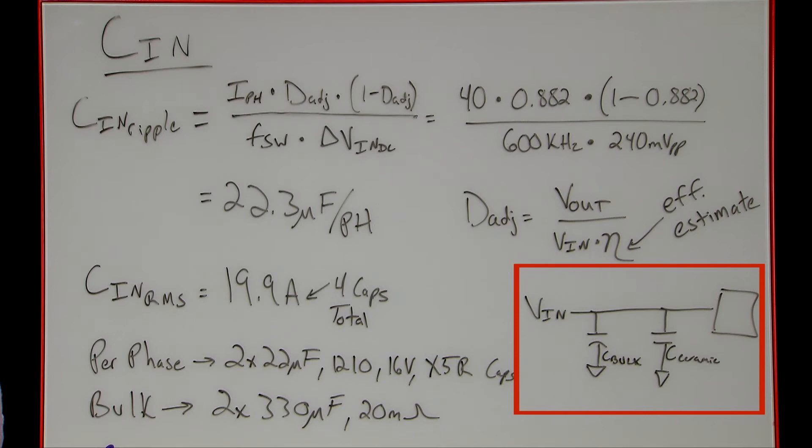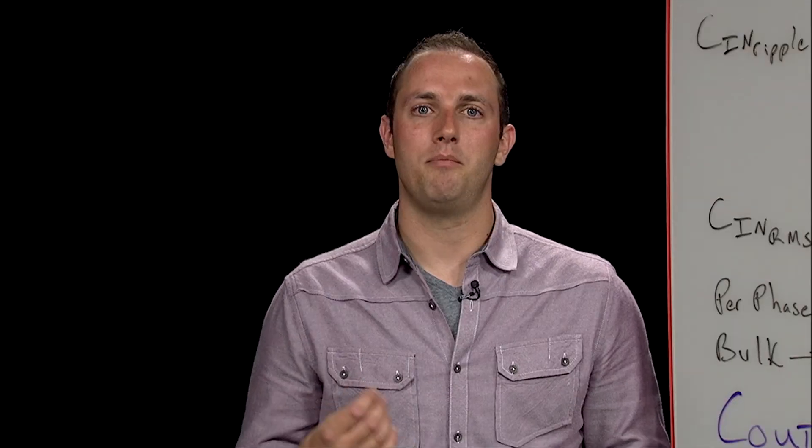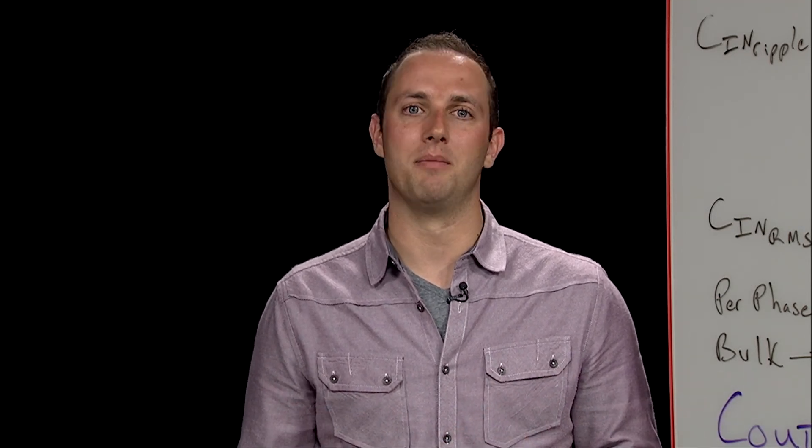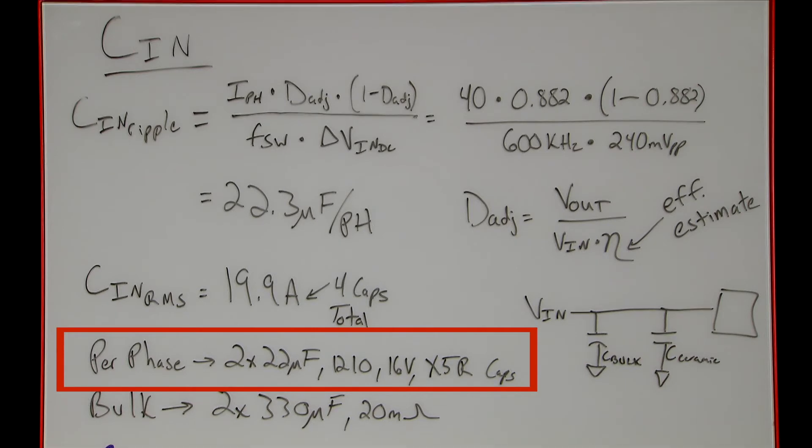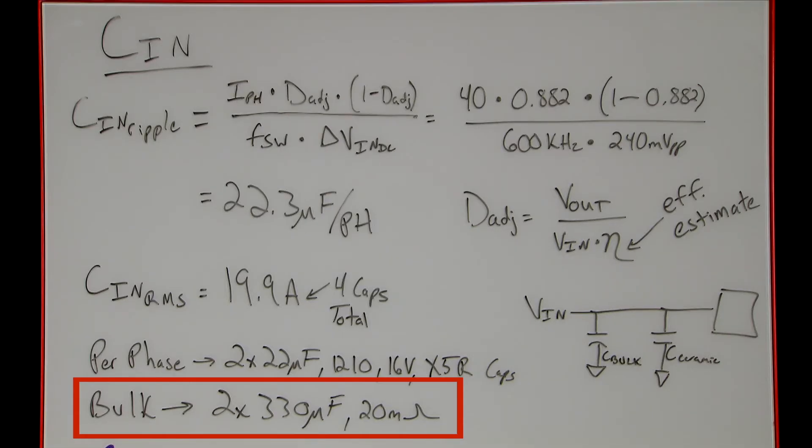When choosing input caps, it's common to use a combination of ceramic capacitors and aluminum bulk caps. The ceramic caps are distributed between the phases to keep the DC ripple on VIN within spec during steady-state operation and must be able to handle the RMS ripple current requirements as well. Big bulk capacitors help provide charge to all phases during large load transients and keep VIN within its AC limits. Following the procedure in the app note, we can calculate that we need two 22 microfarad, 1210, 16-volt X5R ceramic caps per phase to handle both the DC ripple and RMS current requirements.